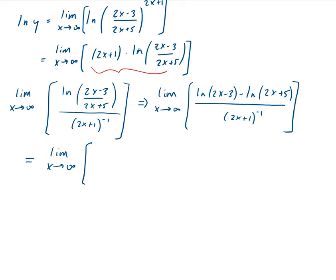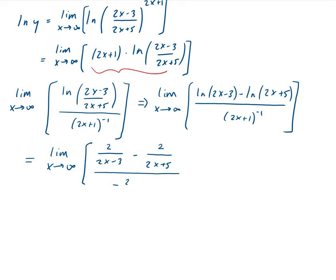For the numerator, we get 1 over (2x minus 3) times 2, using the chain rule, minus 1 over (2x plus 5) times 2. So it's 2 over (2x minus 3) minus 2 over (2x plus 5). Then divide by the derivative of (2x plus 1) to the negative 1, which gives us minus 2, all divided by (2x plus 1) squared.